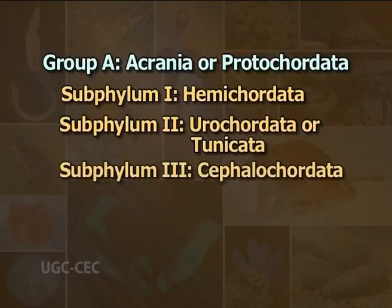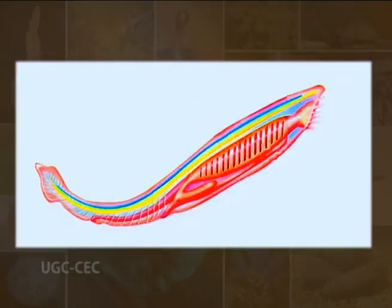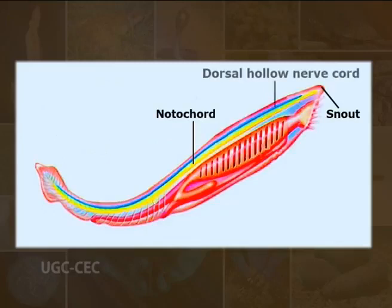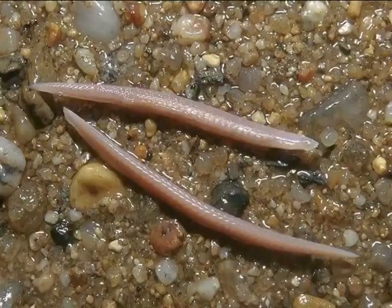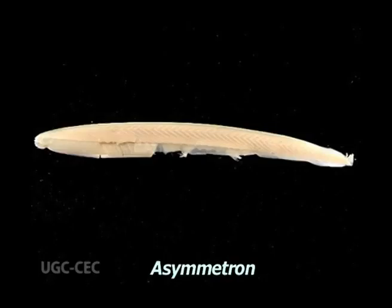Sub-phylum 3: Cephalochordata — in Greek, cephal means head and cauda means tail. Cephalochordata is a small fish-like animal showing the main chordate characters. The notochord extends the entire length of the body, projecting beyond the nervous system to the tip of the snout. They have a dorsal tubular neural tube without a defined brain. Pharynx is large with numerous gill clefts, equivalent to those of urochordates. There is a definite coelom. Examples include Branchiostoma and Asymmetron.